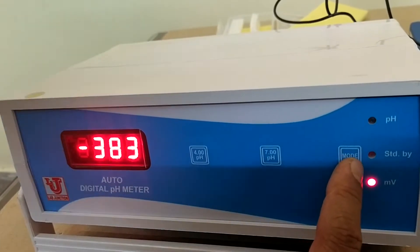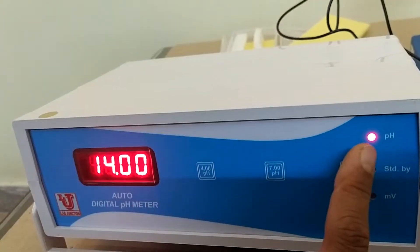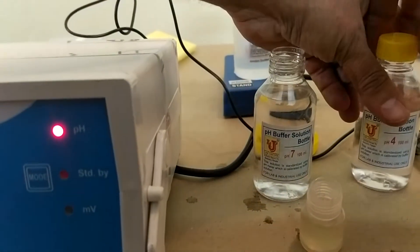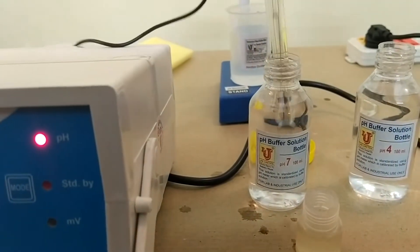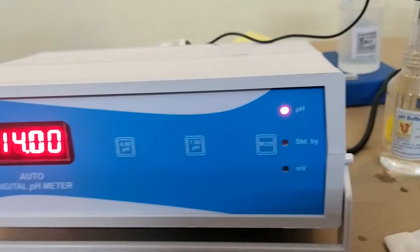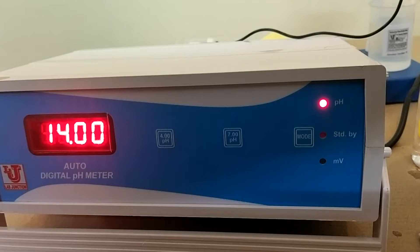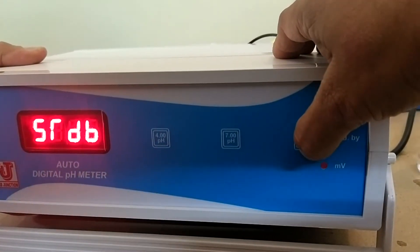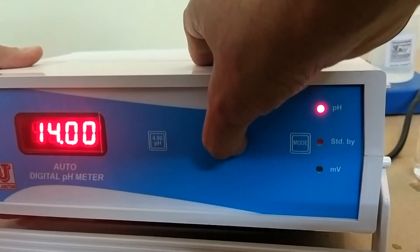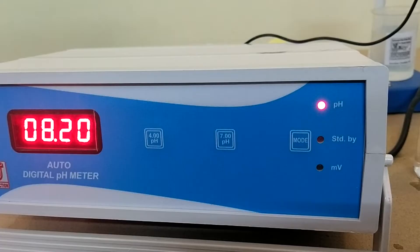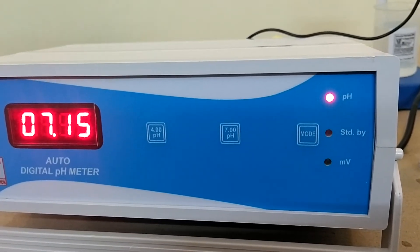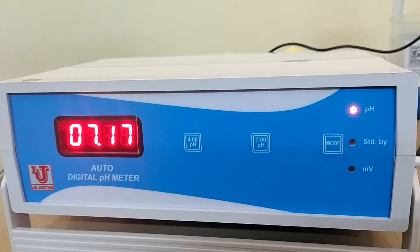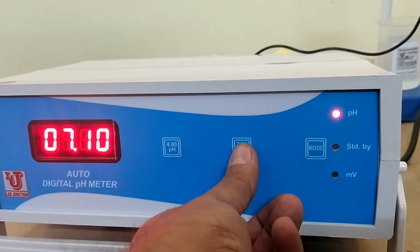Now how to calibrate this. Put the switch on pH and dip the electrode in 7 pH like this. And press 7 for this. Suppose you got 7.17, again press 7 pH.